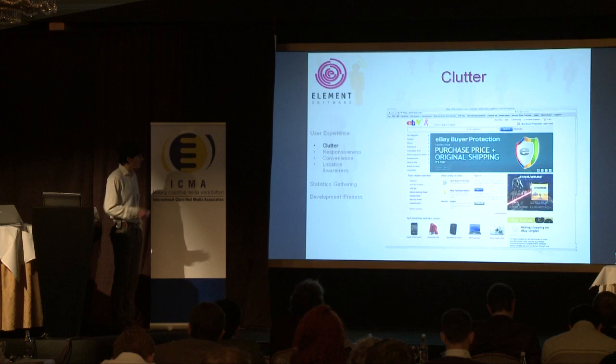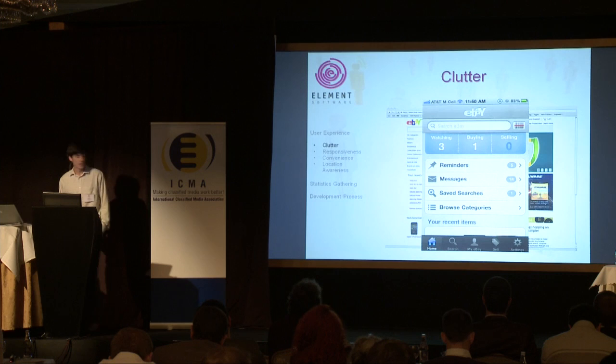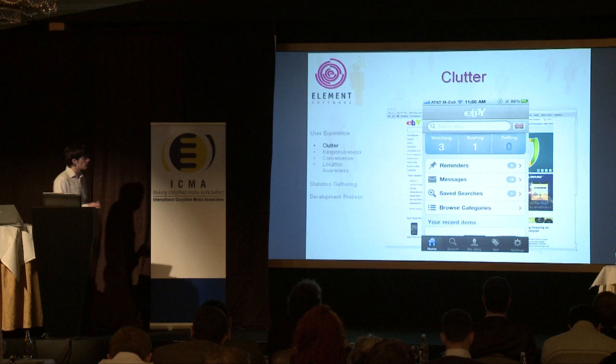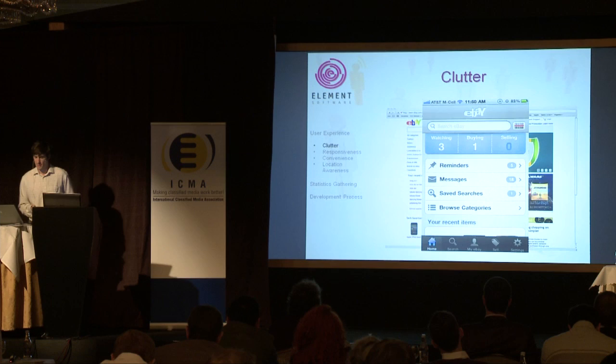So clutter — you can see here a screenshot of the eBay homepage. There's a lot going on: ads, top-selling items, categories, lots of links. If we compare this to their iPhone app, you can see that there's a summary of information very relevant to the user, a few clickable links and a menu bar at the bottom. Mobile users are generally more focused on their goal than a web user, so you need to present the relevant information and eliminate anything else.